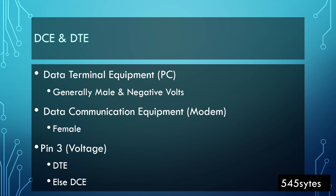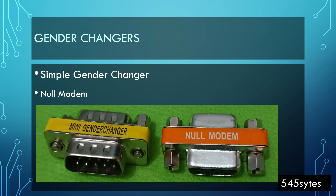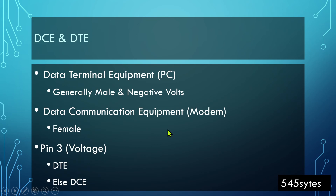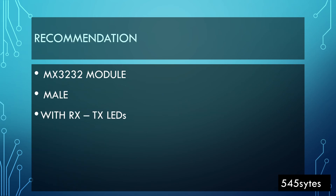If pin 3 has voltage on it, then it is DTE; otherwise it is DCE. This concept will be helpful when applying this solution. My understanding is that this RS232 module should be DTE and the cable from the inverter should be DCE — I may be wrong, but this is all I have learned so far.